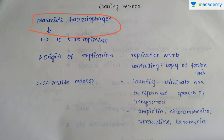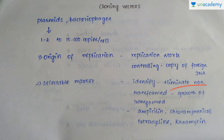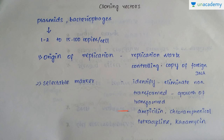The second property is the selectable marker. This is mainly used to distinguish between transformed and non-transformed cells. Transformation is actually the process when foreign DNA is ligated with the vector. It will eliminate the non-transformed cells and help the growth of transformed cells. The selectable markers commonly employed are ampicillin, chloramphenicol, tetracycline, and kanamycin.